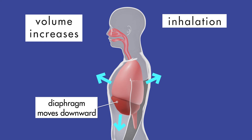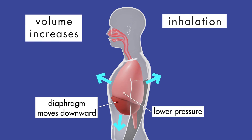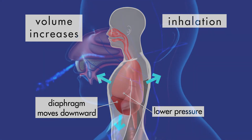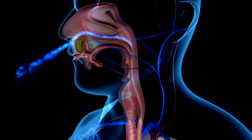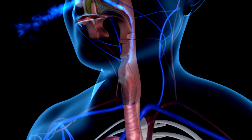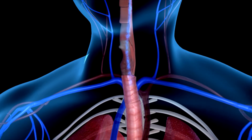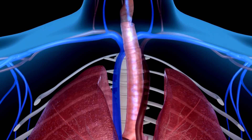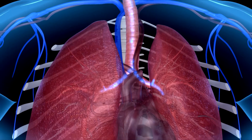At the same time, muscles in the chest and back expand the width of the thoracic cavity, which further increases its volume. When the volume of the thoracic cavity increases, the volume of air inside the lungs also increases. This increase in volume creates a region of lower air pressure inside the lungs. Since air moves from a region of higher air pressure to a region of lower air pressure, air rushes in through the mouth and nostrils to fill the lungs. This is inhalation.